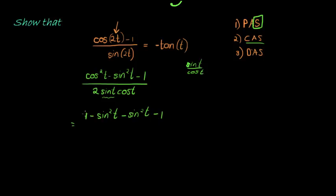And then we have minus sine squared t minus 1. And then we see, oh, that's lovely because 1 minus 1 is 0. This is the numerator. Let's just write down the denominator: 2 sine t cos t.